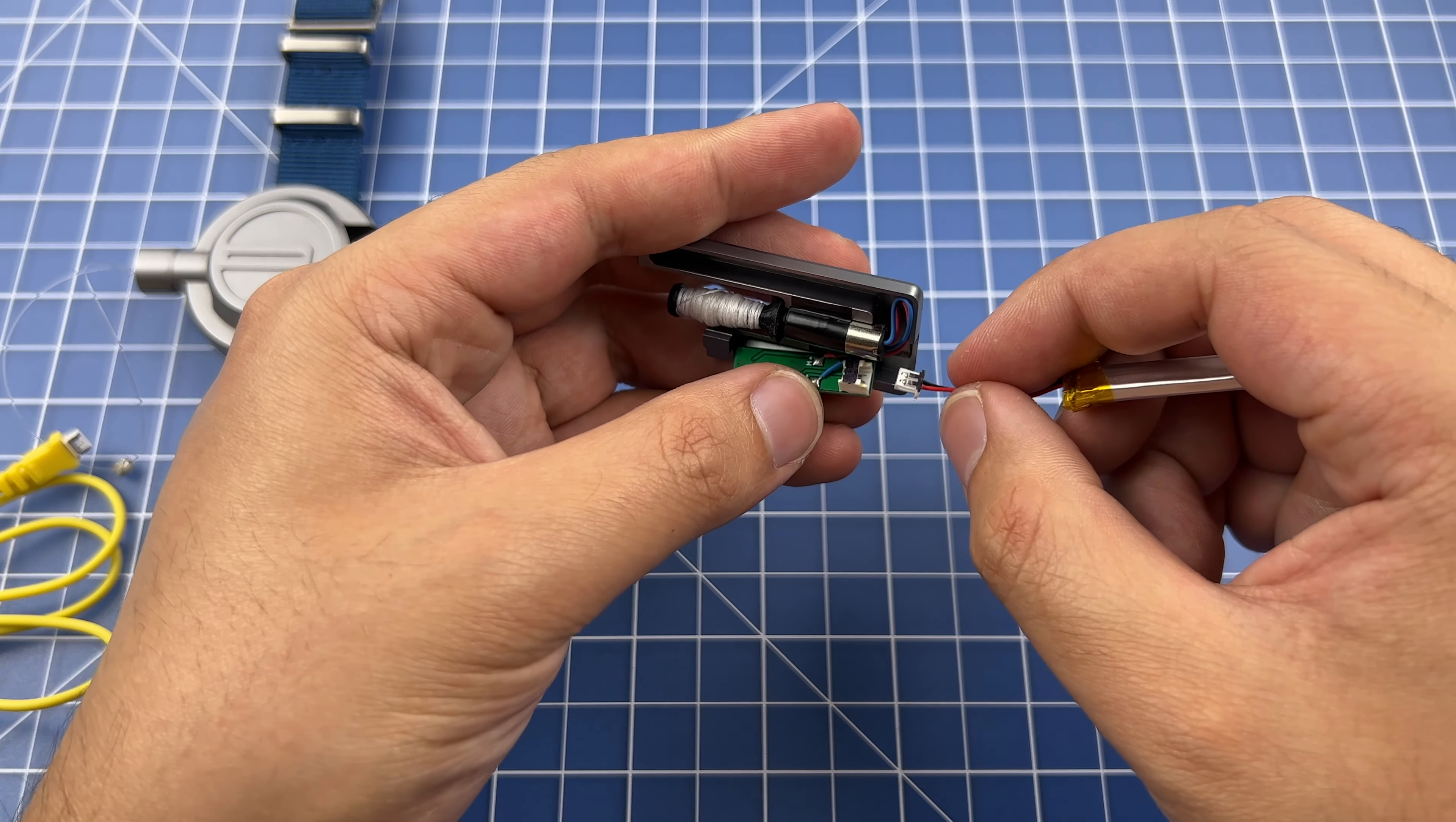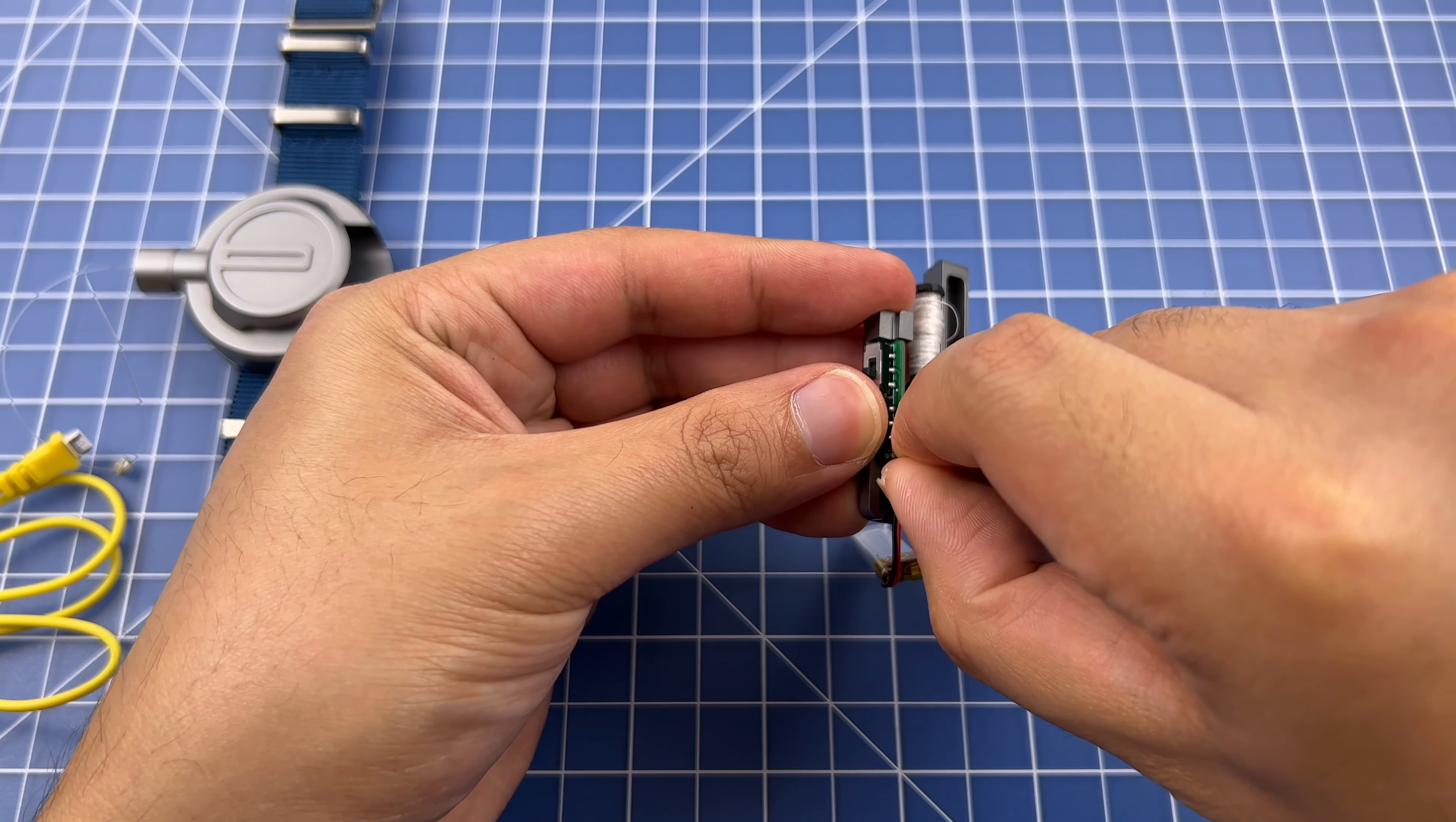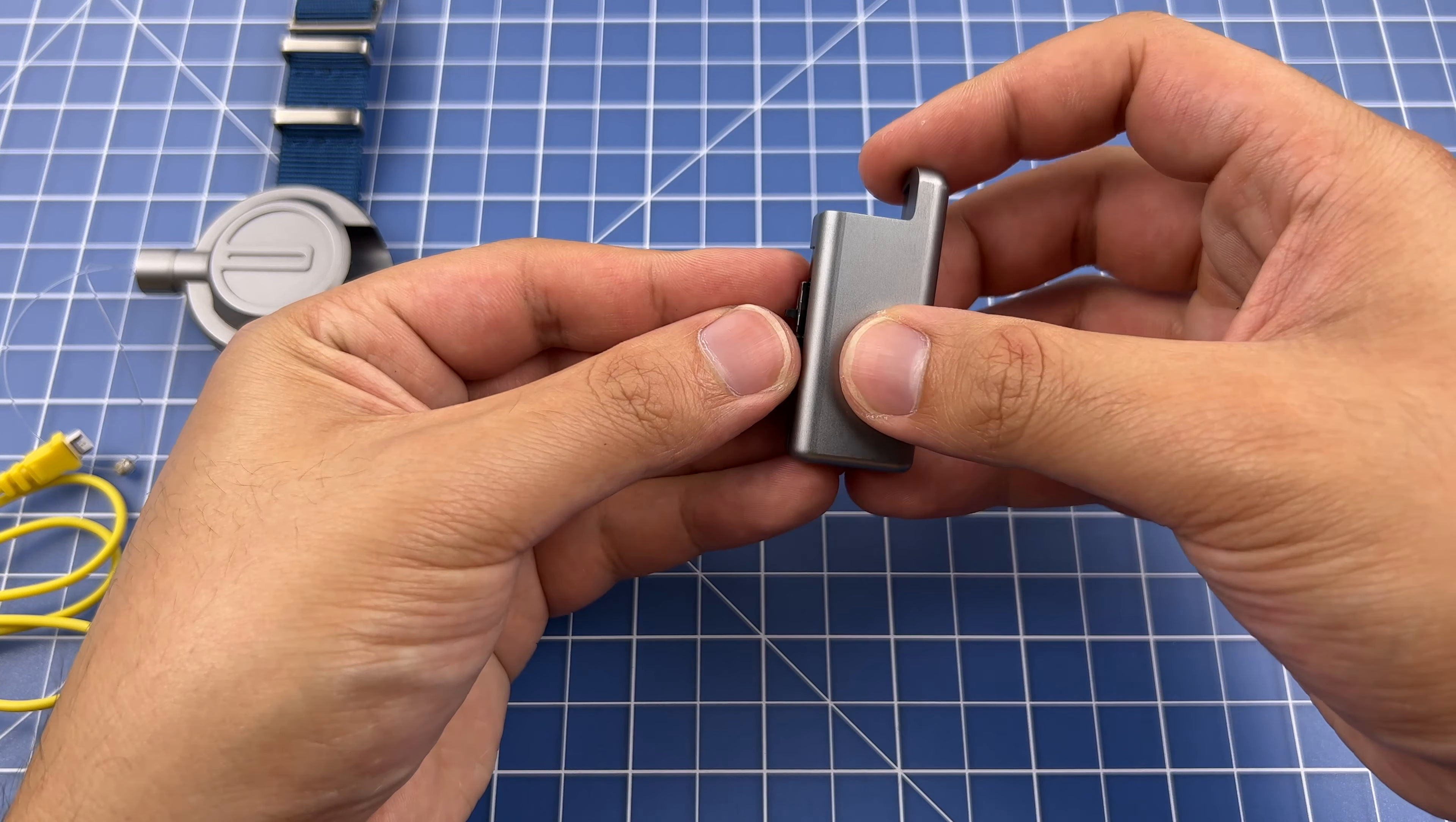Once again, line it up black on black and carefully push the ports together. Reposition the battery inside the cartridge and once that's done, get the top cover and screw it back on.